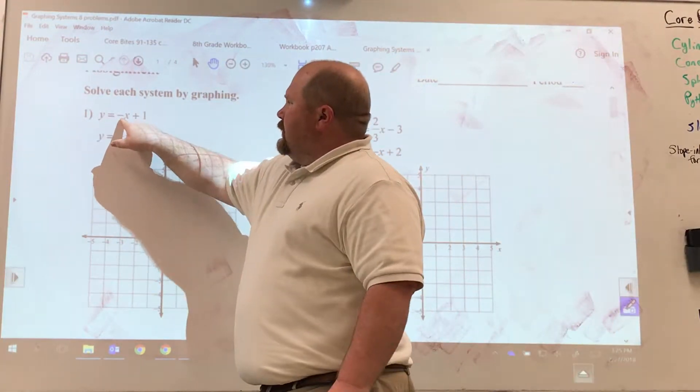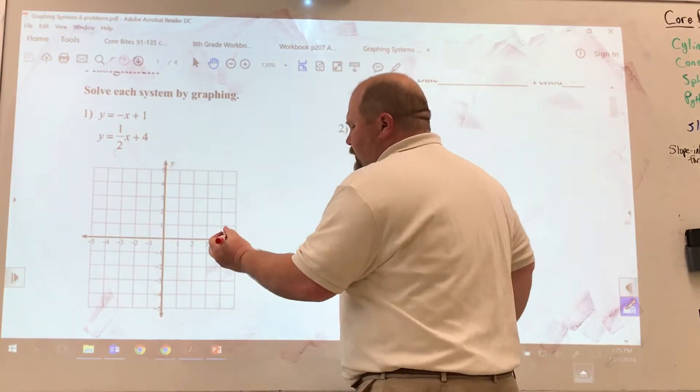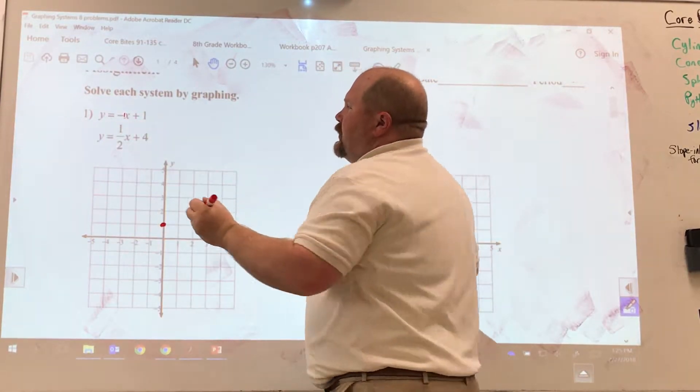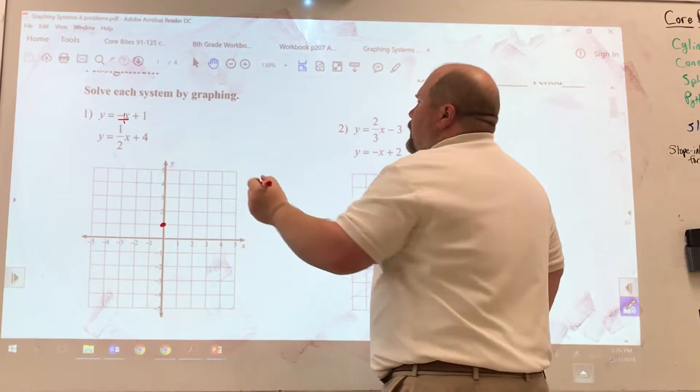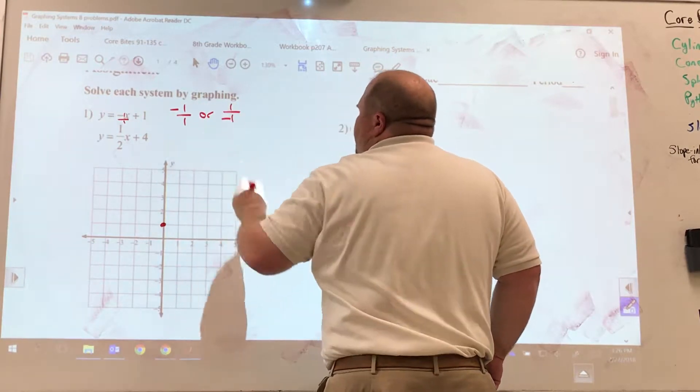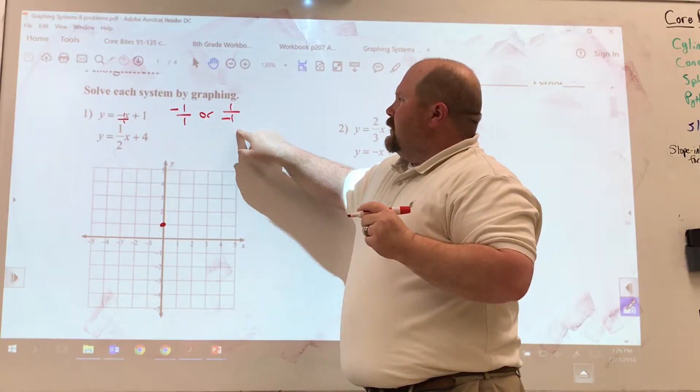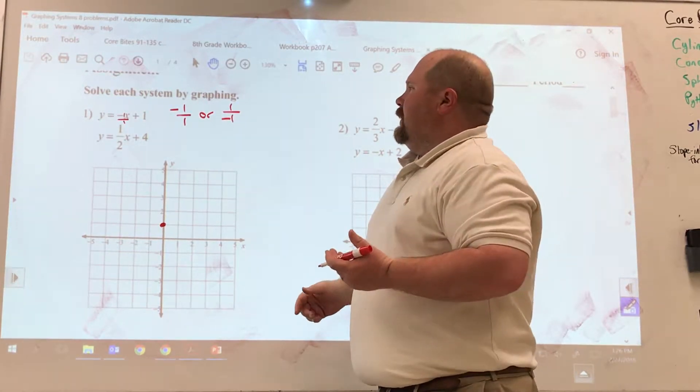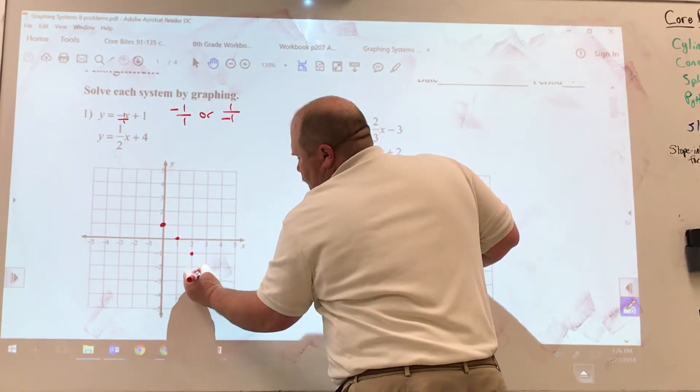We can see that they are in y equals mx plus b form. So for number one, we're going to start at that y-intercept with a positive one. It's here, and we know that there is an understood one in front of that negative x, so that's negative one. And we do need to make that a fraction, so it's negative one over one.